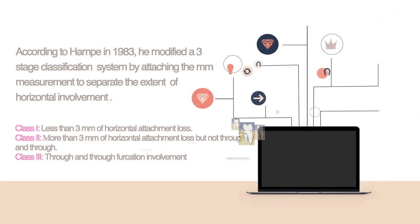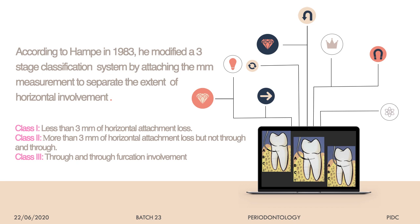Another classification of furcation is by Hamp, based on depth of probe penetration into the furcation. Class 1 is horizontal probe penetration of less than 3 mm. Class 2 is more than 3 mm horizontal penetration but not through-and-through. Class 3 is a through-and-through furcation. This is an exclusively horizontal classification.